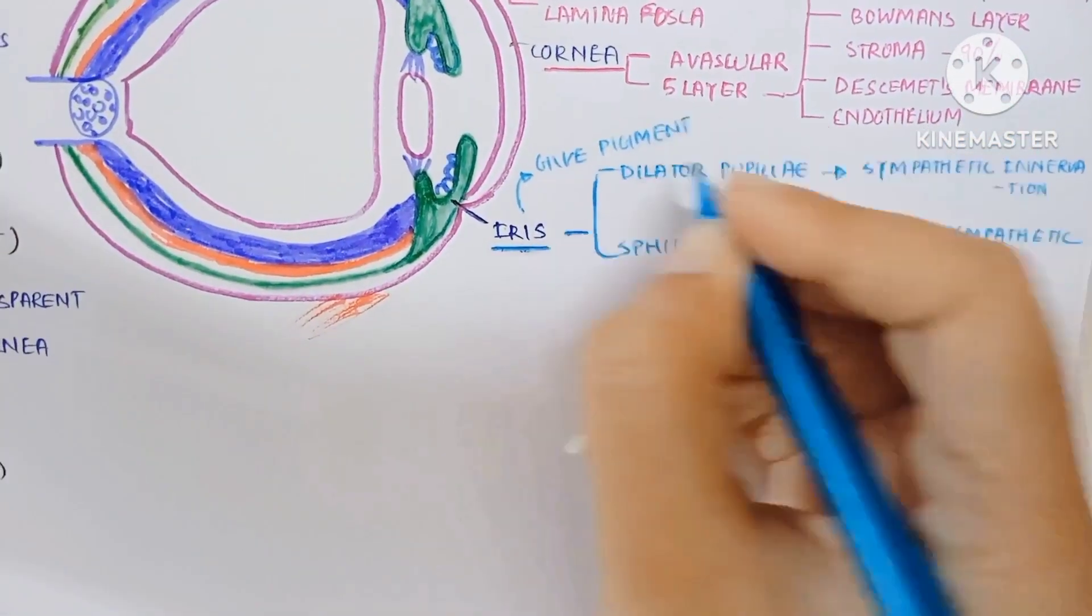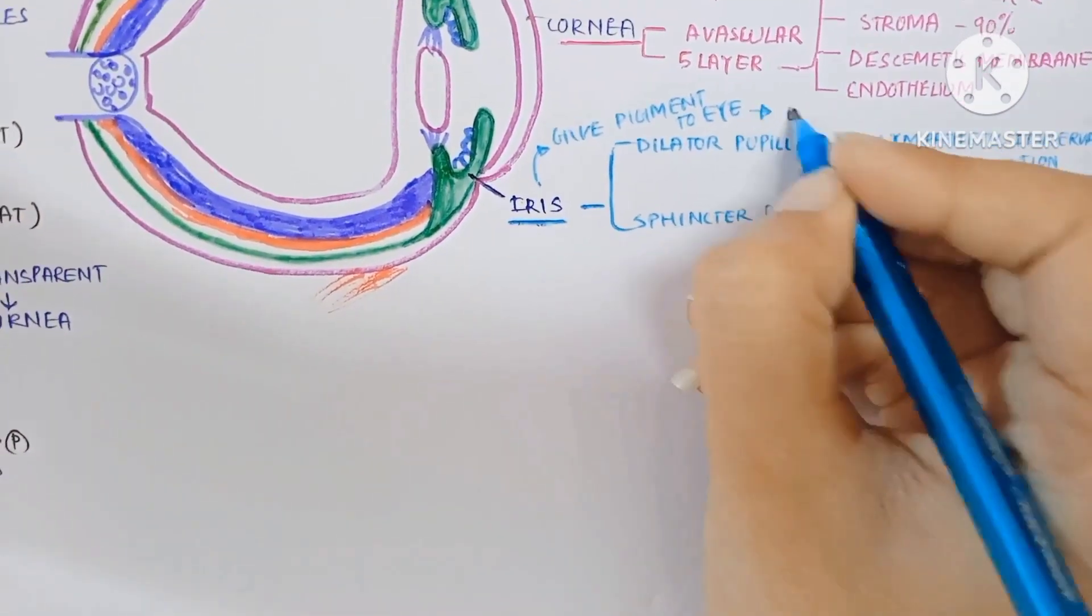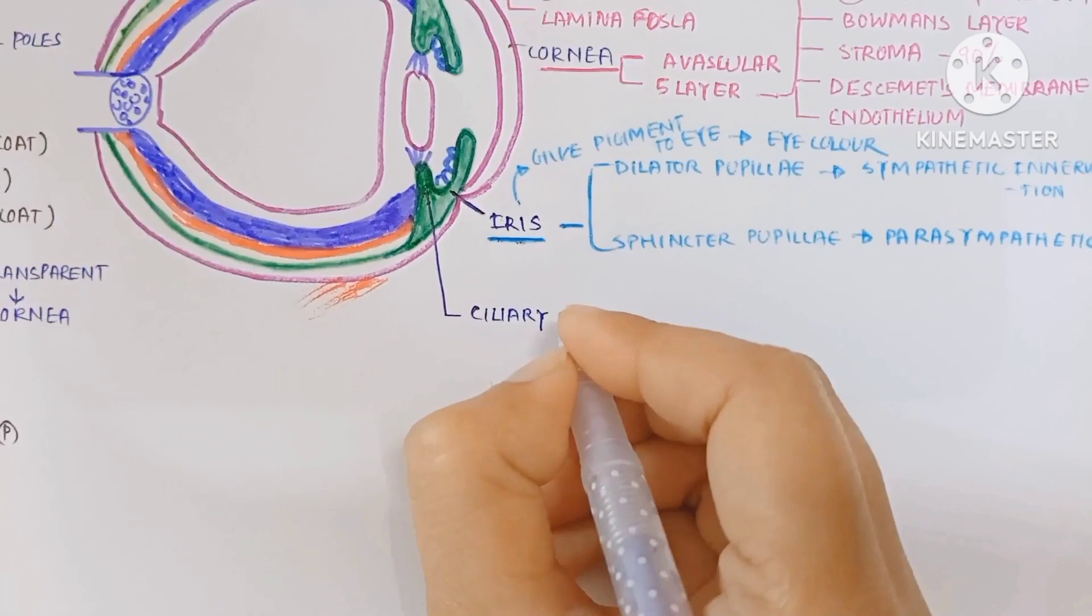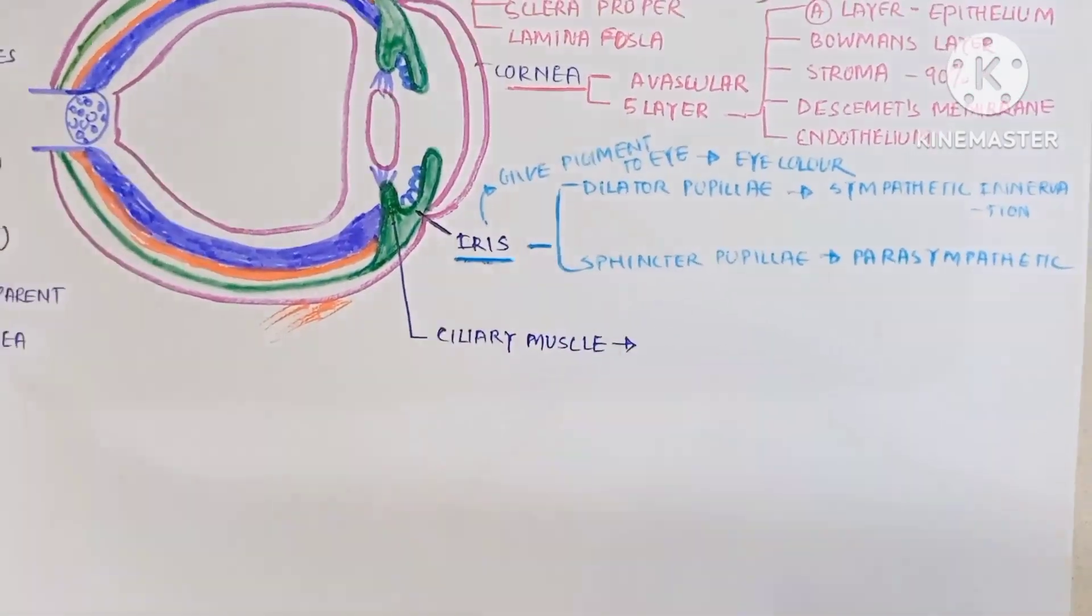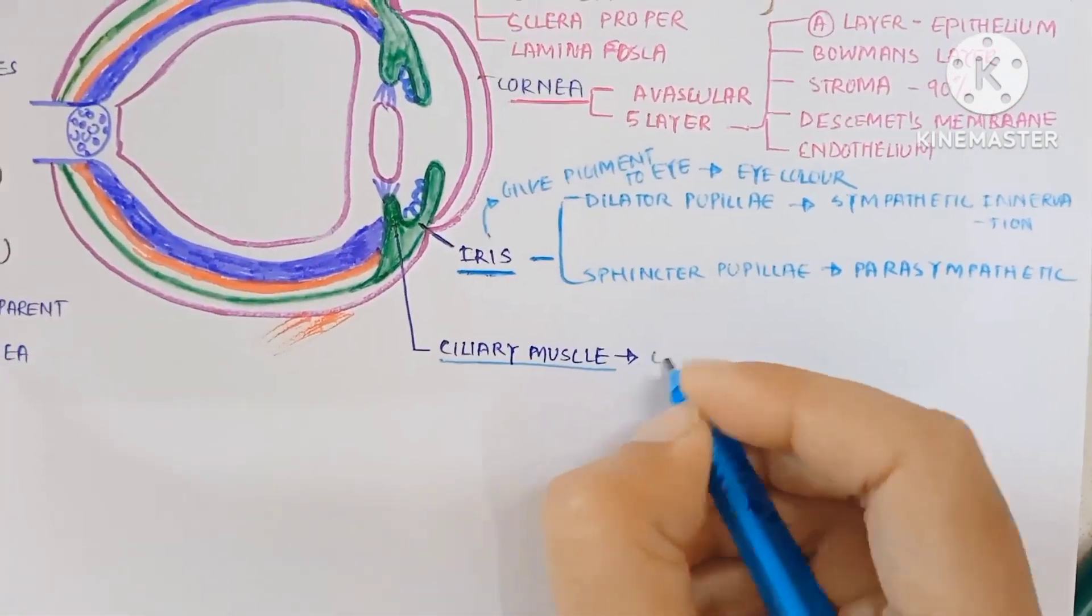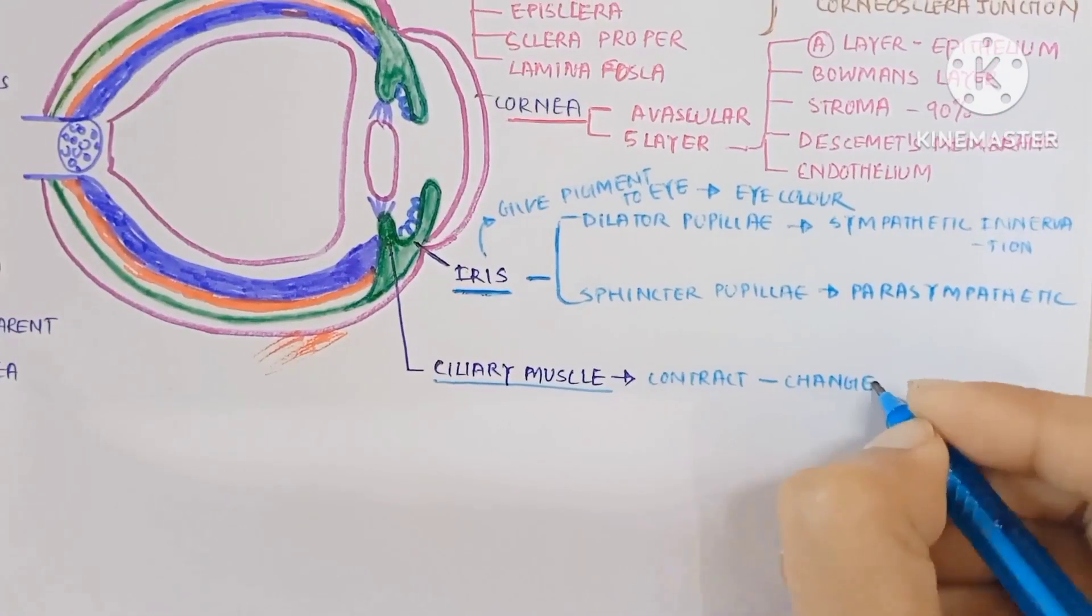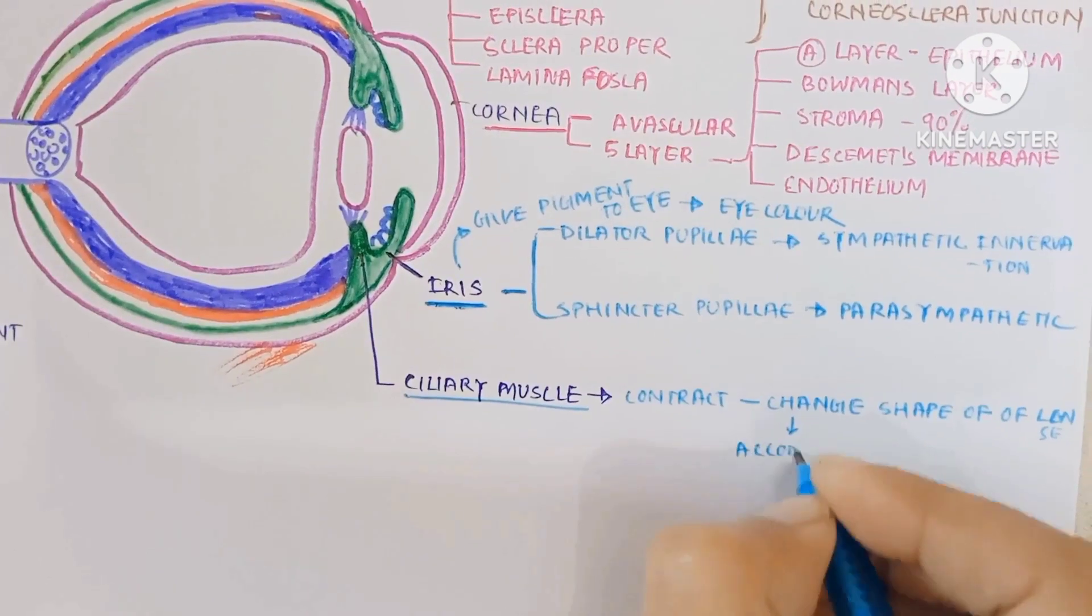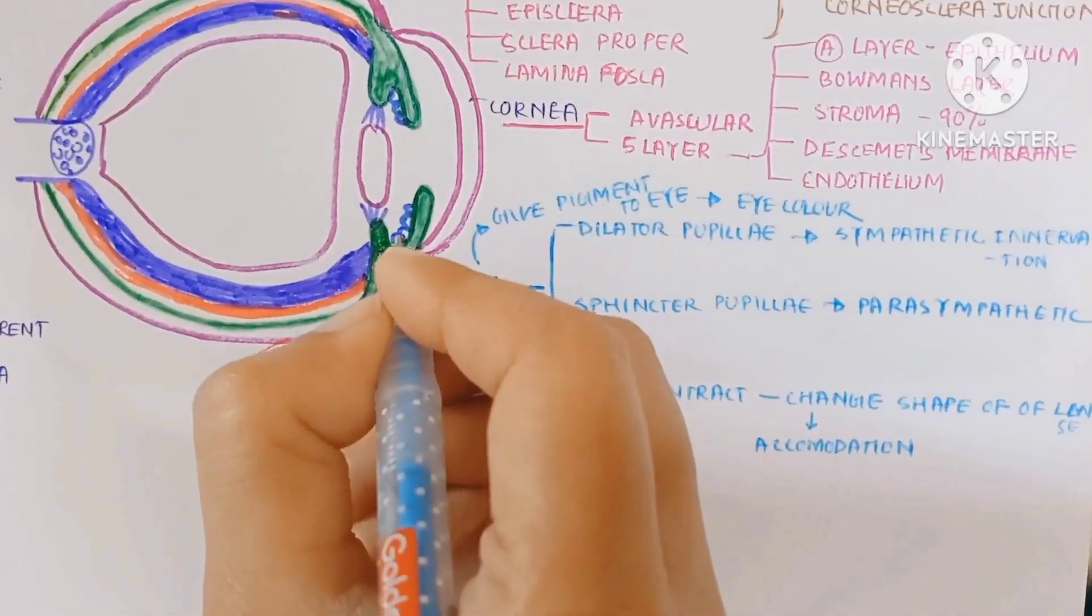The iris gives pigment to the eyeball, that's why every human has a different eye color. Next is the ciliary body which has two parts: ciliary muscle and ciliary process. The ciliary muscle contracts to change the shape of the lens, which helps in accommodation.